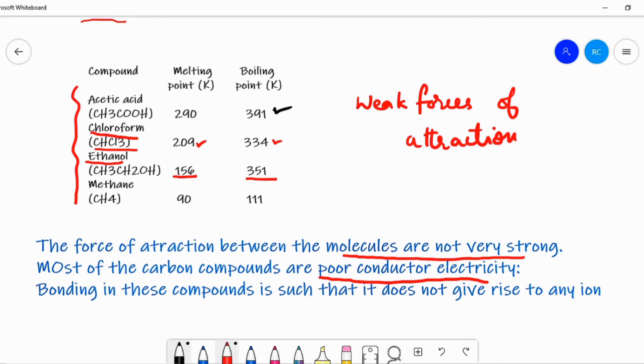We learned two points from this topic. Carbon compounds usually have low melting and boiling points because they have weak forces of attraction in this compound. Second point is that most of the carbon compounds are poor conductors of electricity because they do not give any ions.